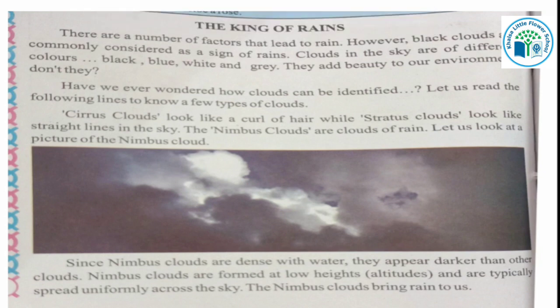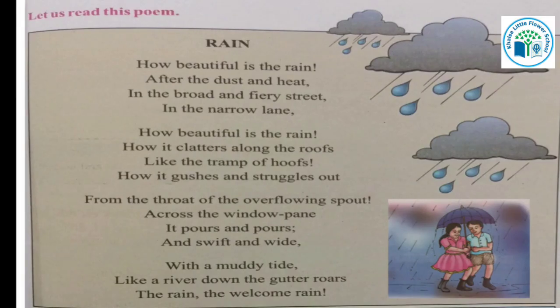Looking at the picture, the dark-colored clouds are nimbus clouds. Since nimbus clouds are dense with water, they appear darker than other clouds. Nimbus clouds are formed at low altitude and are typically spread uniformly across the sky. Because they are heavy with water, they spread across the whole sky, and the nimbus clouds bring rain to the earth.